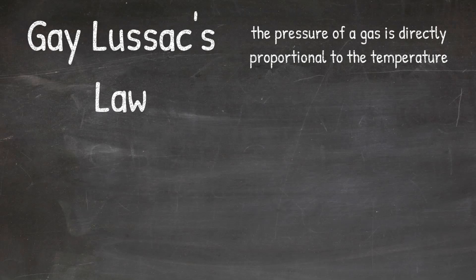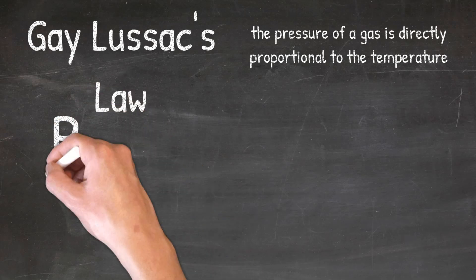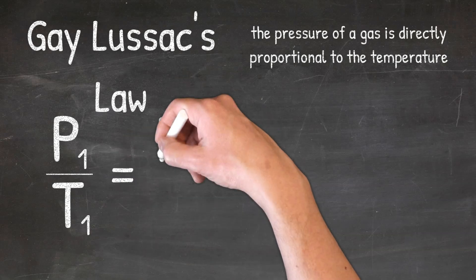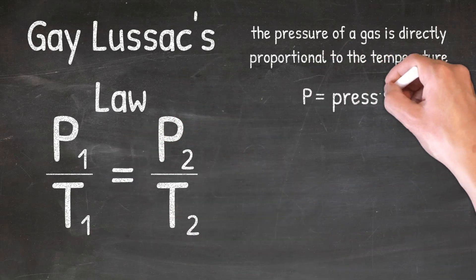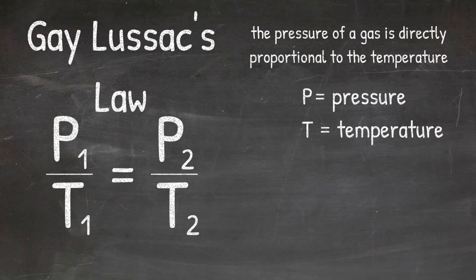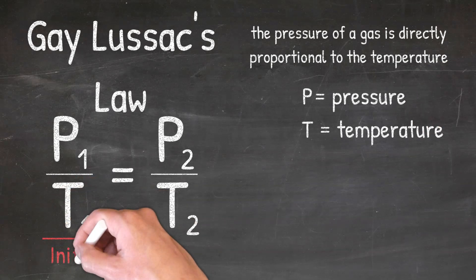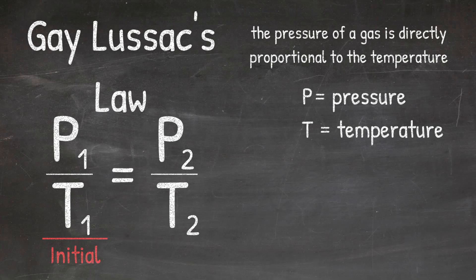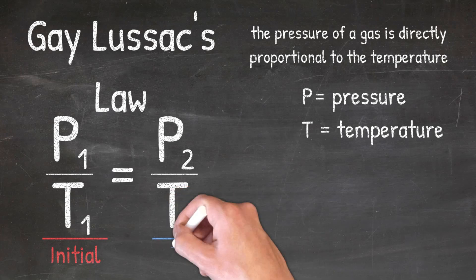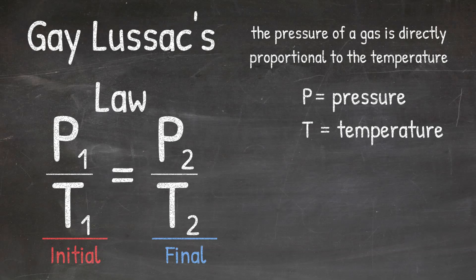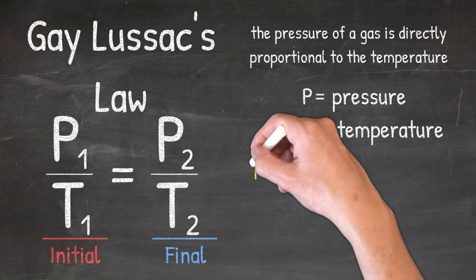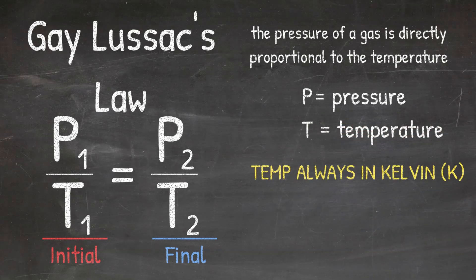When it comes to solving gas law problems using Gay-Lussac's Law, we can use the formula P1 over T1 equals P2 over T2, where P stands for pressure and T stands for temperature. The 1 represents the initial pressure and initial temperature, which is the pressure and temperature you are starting with, while the 2 represents the final pressure and temperature, which is the pressure and temperature you are ending with. It is important to note that for this formula, you need to make sure that your temperature values are always in Kelvin. If you use Celsius, you will get the wrong answer. Remember that to convert Celsius to Kelvin, you simply add 273 to the Celsius temperature.